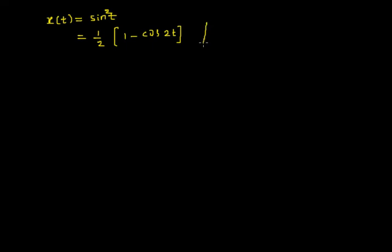I can compare this with the standard signal cos ωt. So I can easily say that by comparing those two, I could write ω = 2. And I already know that ω = 2πf which is equal to 2 in our case.